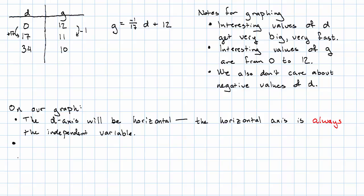Next. We aren't interested in negative values of either variable. So we're only going to show positive values. Now, that won't always be the case. Sometimes we'll have situations where negative numbers do make sense for one or both of the variables.